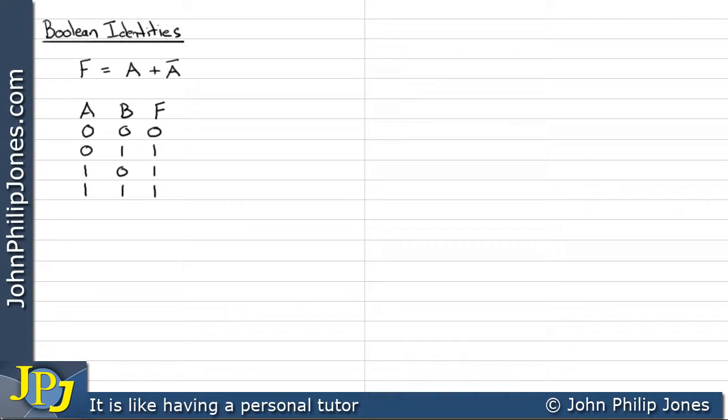In other words, the output is a one when there is at least one one at the input to an OR gate and we can see that that is the case. The last entry we can see there's two ones, but that's at least one one.